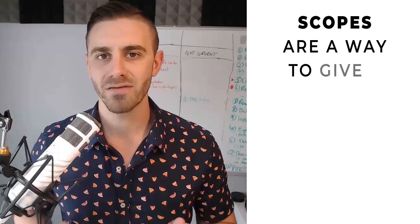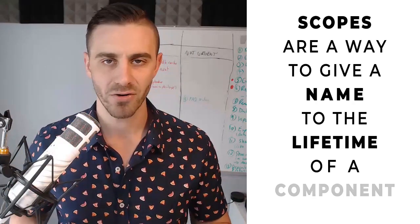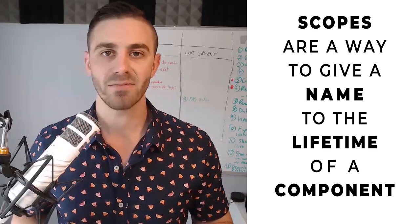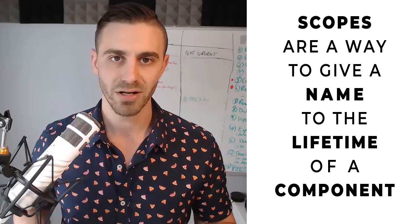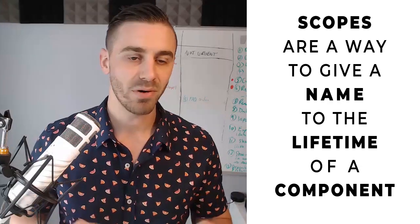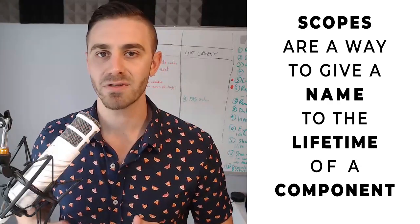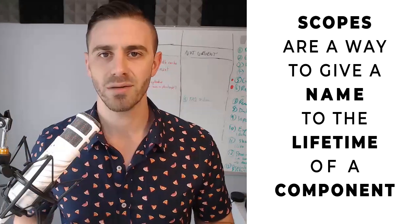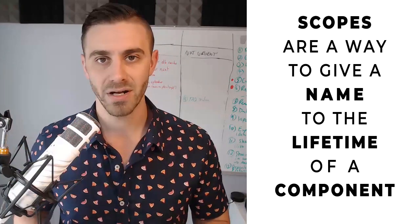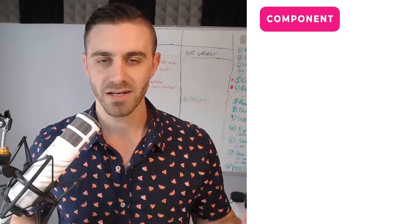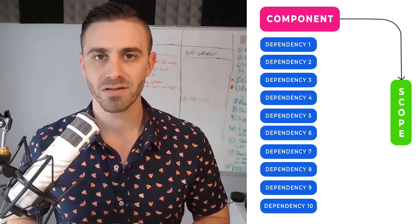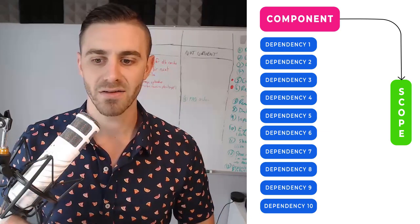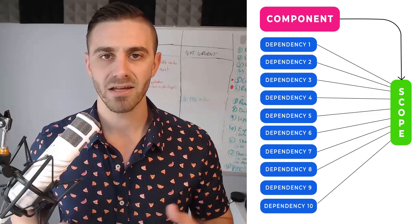So what is a scope? I like to think of scopes as a way to give a name to the lifetime of a component. All the dependencies that exist inside that component are scoped to that component, so they will not be recreated anywhere outside of that scope. It's like defining a state of ownership to a component and its dependencies. If a component has 10 dependencies, you scope that component to some scope and add the same scope to its dependencies — grouping and packaging them together.